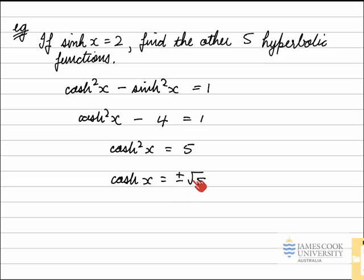To work out which solution we will take, we remember a graph of cosh x, which looks like that. This is the x-axis. This would be the y-axis. This is the graph y equals cosh x.